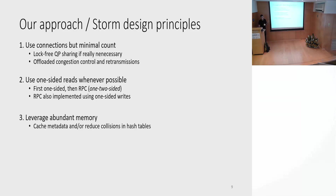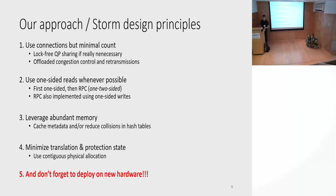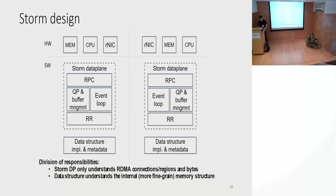Third, we should leverage abundant memory — for instance, caching data-structure-specific metadata so that we get one round trip in the common case, or oversubscribing memory to reduce hash table collisions, which turns out to be very effective. Fourth, even with better hardware, we should still minimize translation and protection state. Our approach is to use contiguous physical allocation: contiguous to reduce the number of registered buffers and eliminate protection state, and physical to eliminate address translations. And finally, don't forget to deploy new hardware.